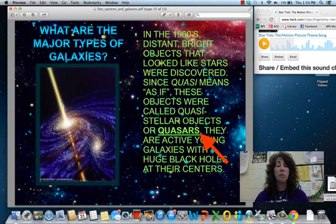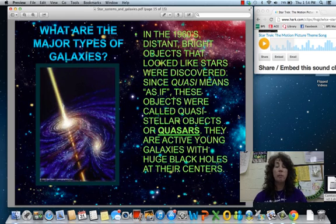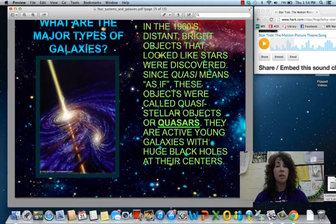Now, the last major type of galaxy is called a quasar. Quasi means as if. In the 1960s, distant bright objects were able to be seen, were discovered, and they looked like stars. And so they were called quasi stellar objects, or quasars. They are active young galaxies. They have enormous black holes at their centers. And so of course the amount of gravity effect there is huge.